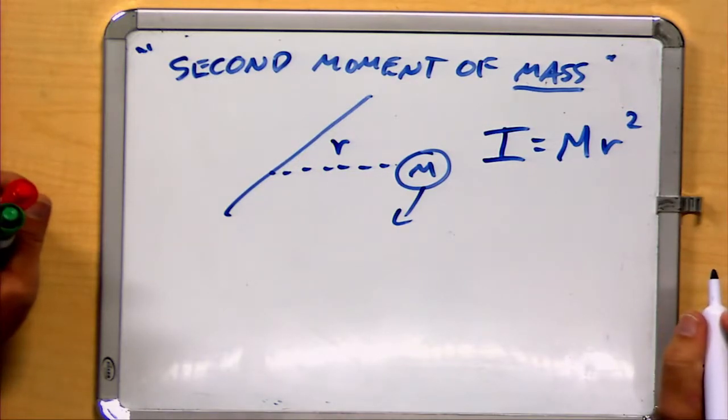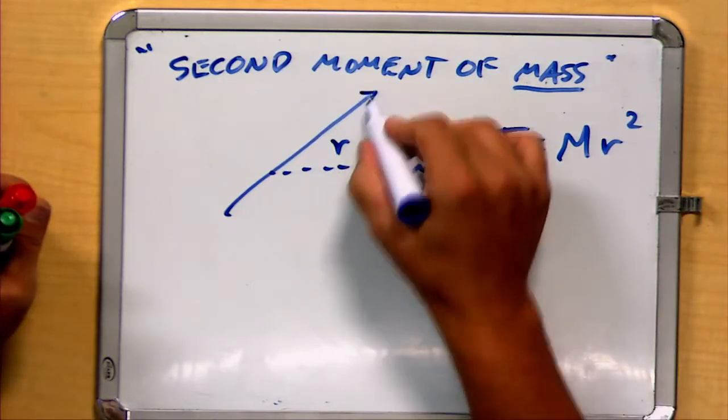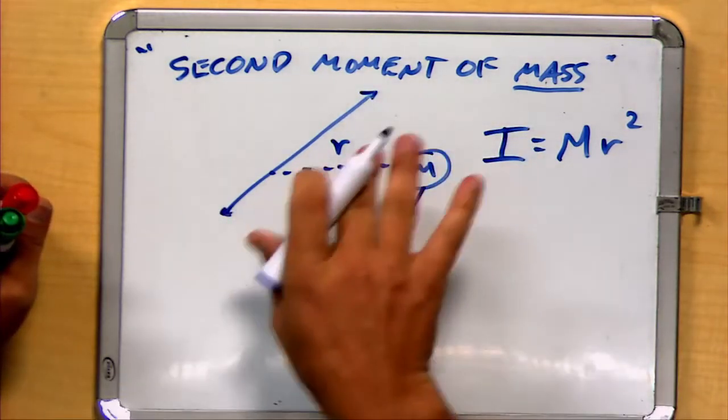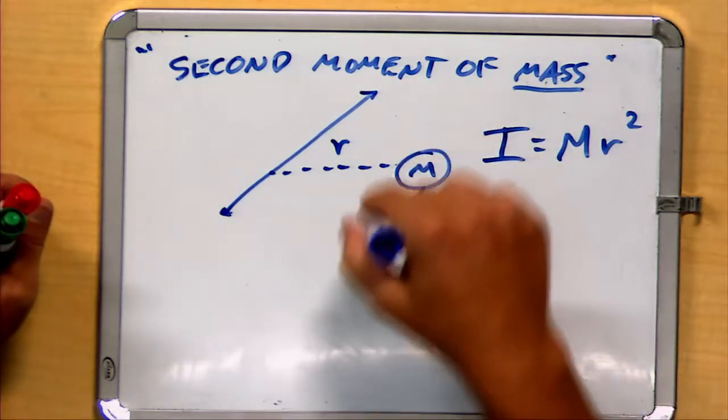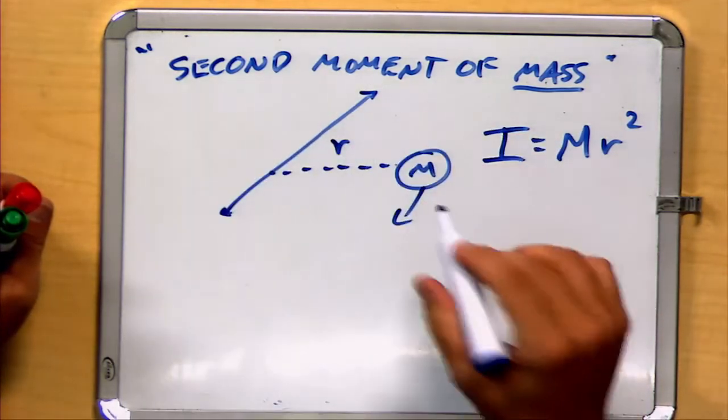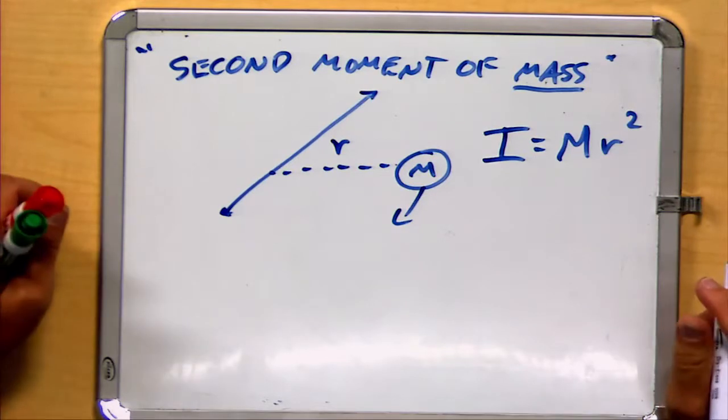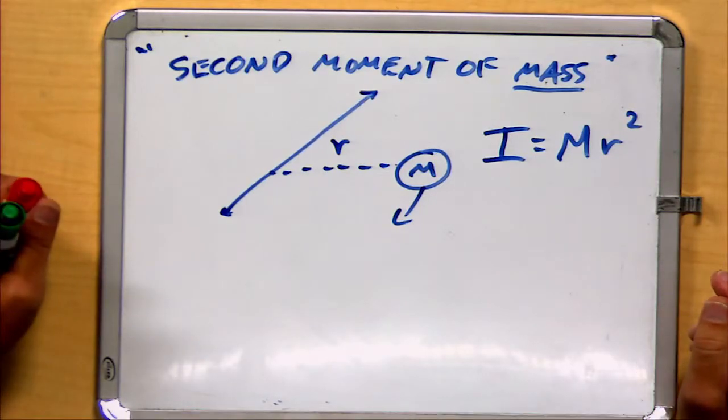This is also sometimes called rotational inertia. And by the way, you can think about this axis as going sort of into the piece of paper, or into the page, and that the mass is being attempted to be spun around that. And it has a resistance to it, and that resistance is this moment of inertia.